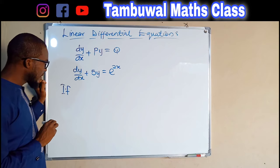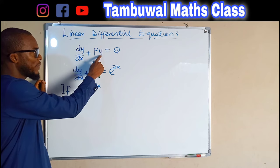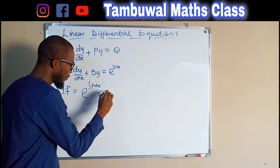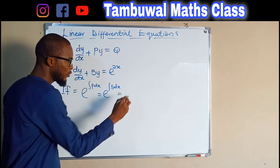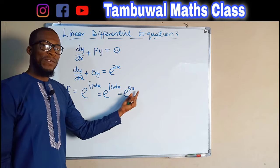To obtain the integrating factor, we take e to the integral of p dx. Here p is the coefficient of y, which is 5. So this is equal to e to the integral of 5 dx. Integrating 5 dx gives 5x, hence e^(5x) is our integrating factor for this differential equation.